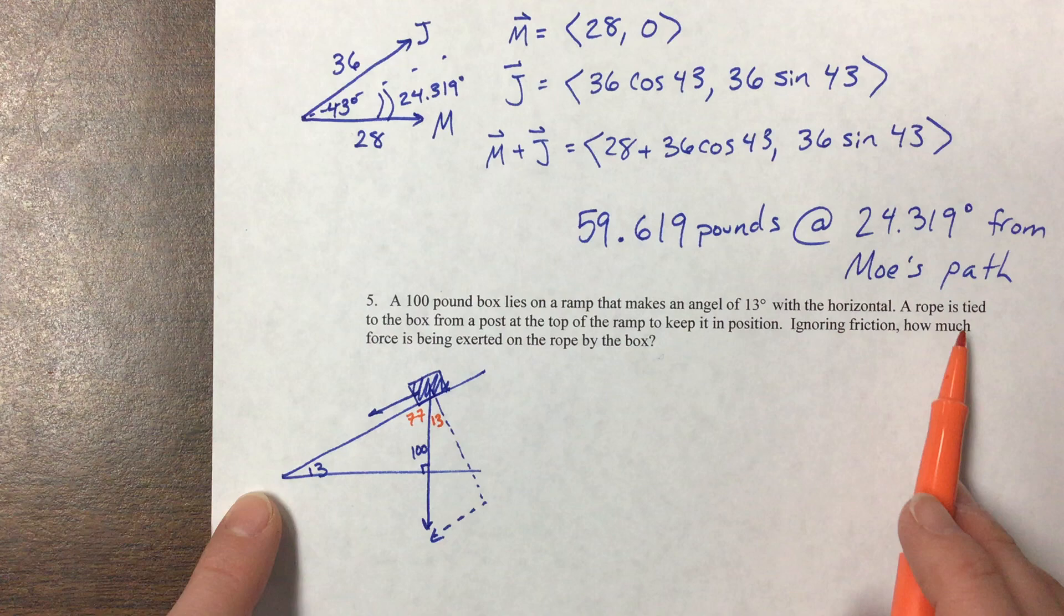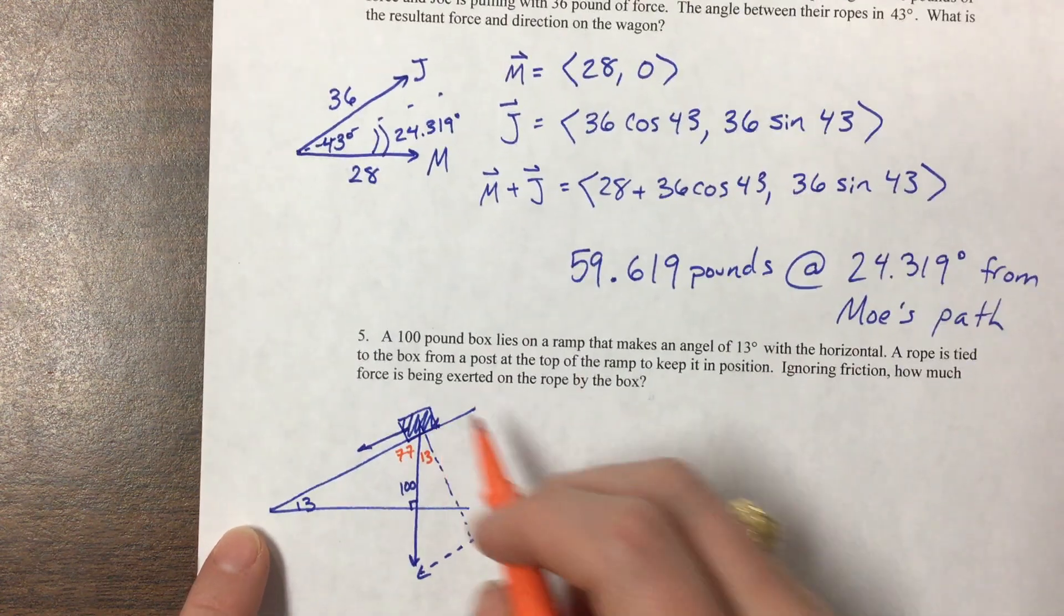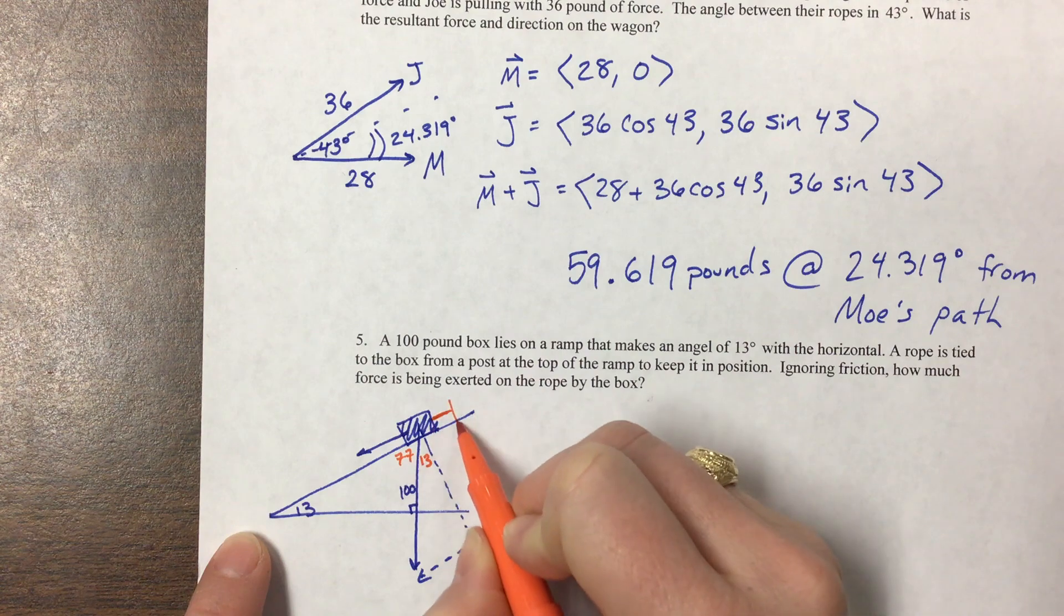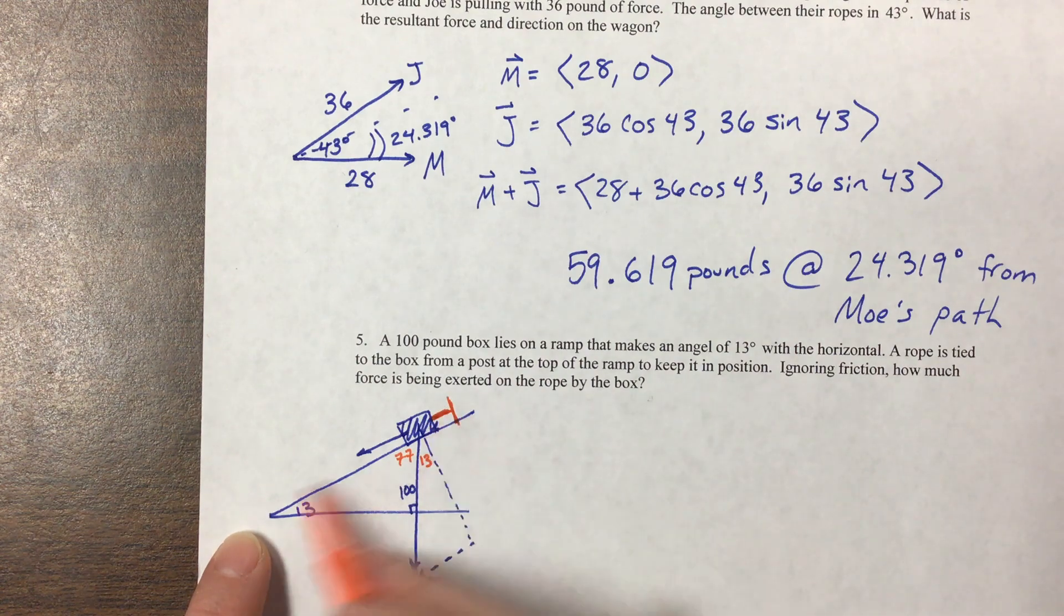So what we're wanting to know, a rope is tied to the box from a post. So here's the rope, here's the post. They're wanting to know how much force is on this rope that's keeping the box from sliding down.